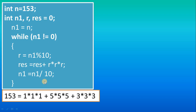The res value starts at zero because each time we are calculating the cube and adding it — that's why we use the plus operator. For doing this task you also need to calculate the remainder. For example, if you calculate remainder 3, you take 3 cubed; then the next remainder will be 5, so you calculate 5 cubed; then remainder 1, so you calculate 1 cubed.